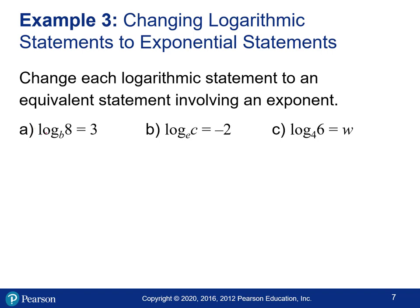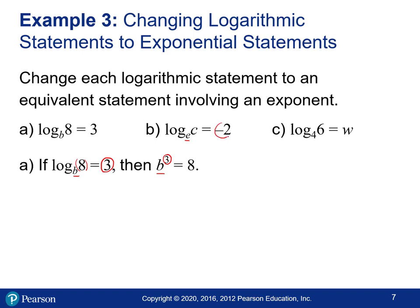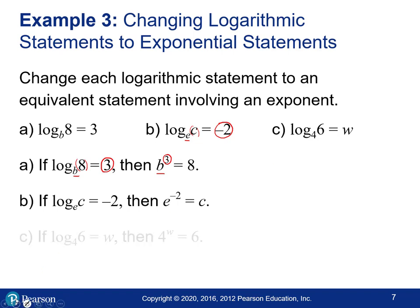Now we'll go the opposite direction — from log form to exponential form, so no word 'log' in the answers. For log base b of 8 equals 3: the base is b, the 3 goes up as the exponent, giving b to the third equals 8. For log base e of c equals negative 2: e to the negative 2 equals c. For log base 4 of 6 equals w: 4 to the w equals 6.